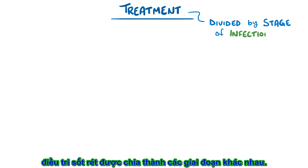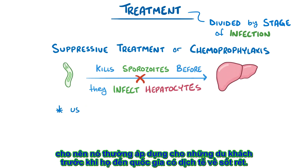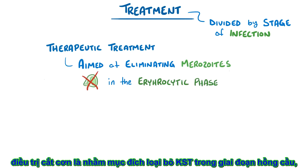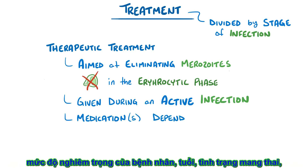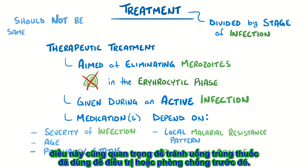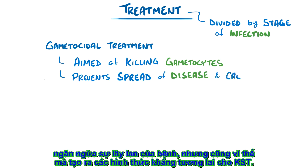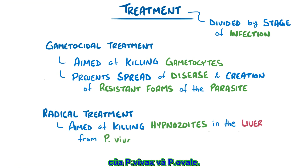Treatment for malaria is generally divided into different stages of infection. Suppressive treatment, or chemoprophylaxis, is aimed at killing sporozoites before they infect hepatocytes, so it's usually given to travelers headed to a country with endemic malaria. Therapeutic treatment is aimed at eliminating merozoites in the erythrocytic phase, so it's usually given during an active infection. The exact medication depends on the severity of the infection, the age and pregnancy status of the patient, the local malarial resistance pattern, and the plasmodium species. Gametocidal treatment is aimed at killing gametocytes to prevent spread of disease, and radical treatment is aimed at killing hypnozoites in the liver from Plasmodium vivax and Plasmodium ovale infections.